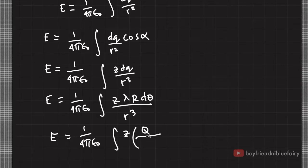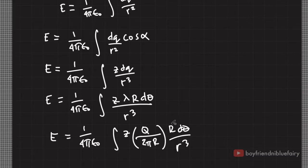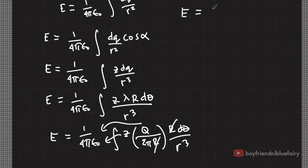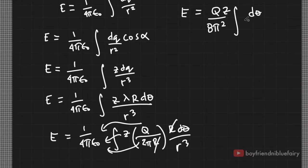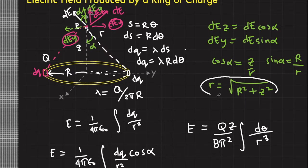Lambda equals total charge Q divided by 2πR. Substituting and noting that one factor of R cancels, we can move the total charge Q and z outside the integral sign since they are constant. Similarly, 2π can also be taken outside the integral sign.